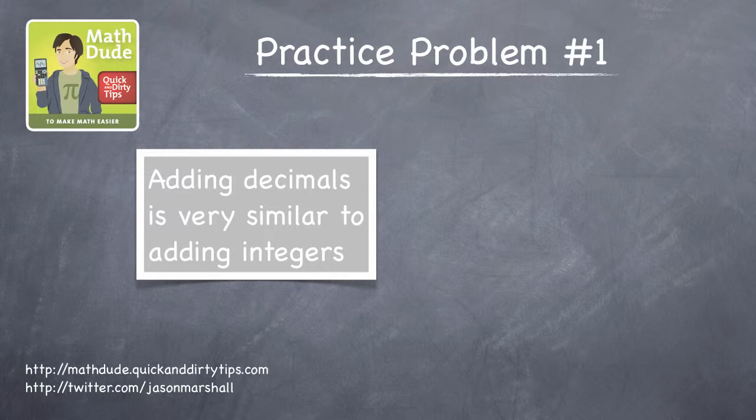For example, let's look at this relatively simple problem, 0.3 plus 0.2 plus 0.7. Our first quick calculating tip for adding integers was to look for pairs or groups of numbers that add to 10. So let's do the same thing here.